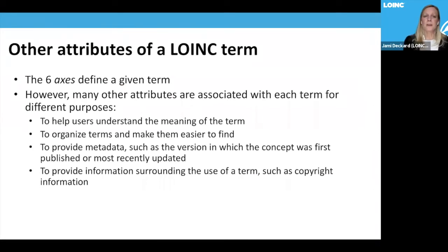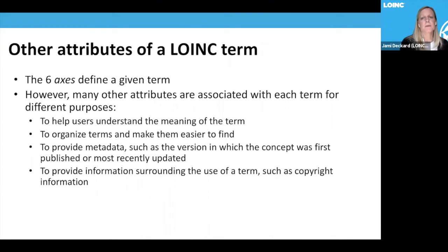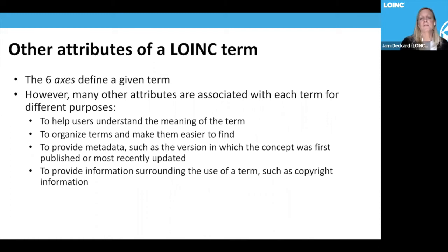LOINC has many additional attributes beyond the six axes. The six axes define a given term and are the primary information needed for mapping, but many other attributes are associated with each term for different purposes. These help users understand the meaning of a term, organize terms, and make them easier to find. Other attributes provide metadata such as the version when a term was first released or last updated, and information surrounding the use of a term — such as copyright, which alerts users that they need to seek approval from the intellectual property holder of that instrument.